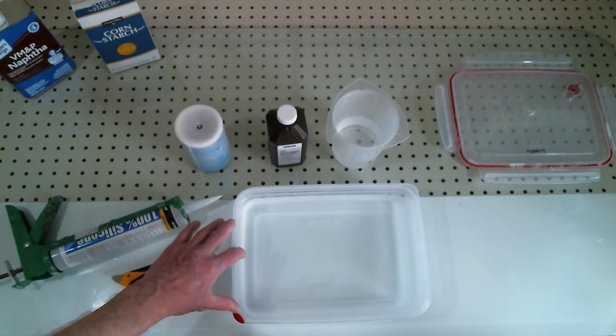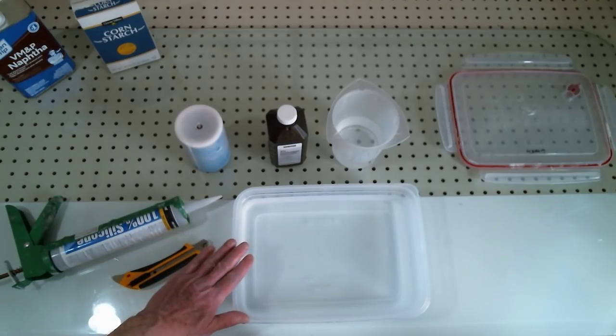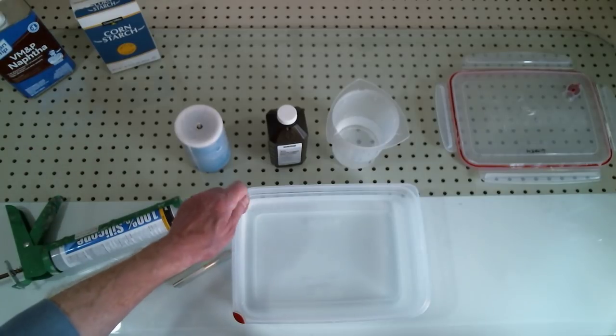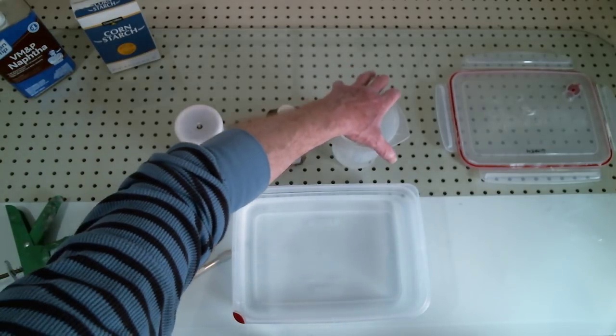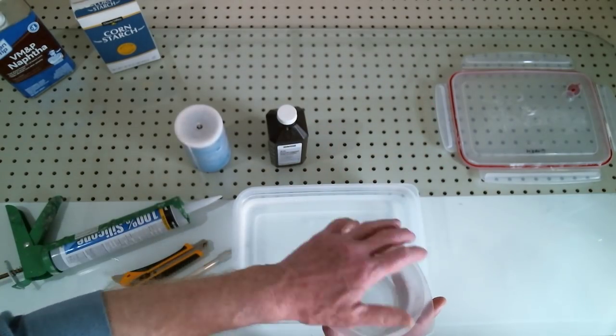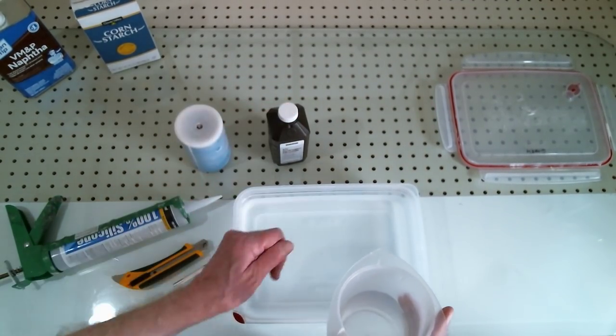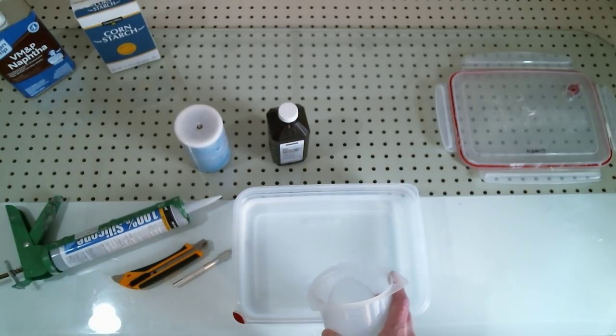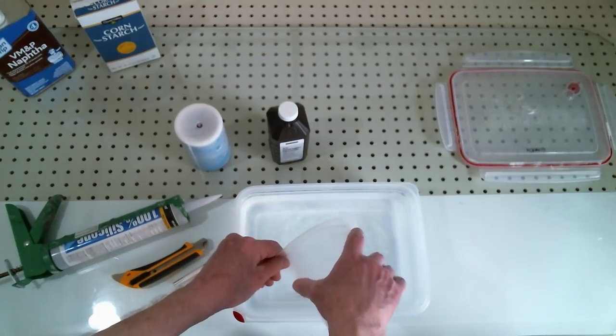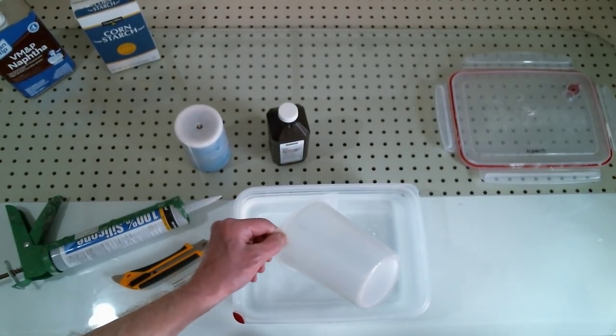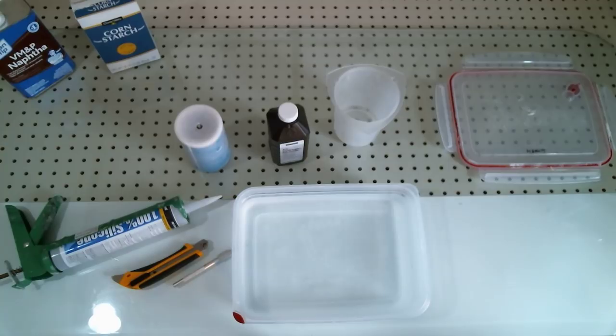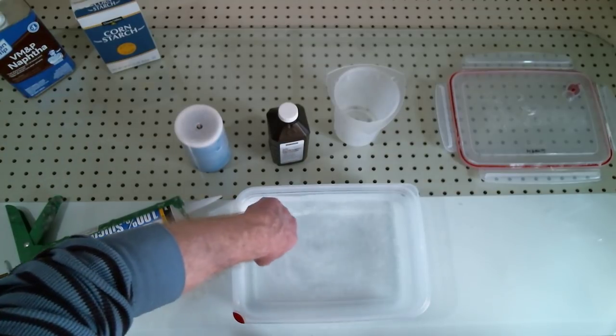Now what I've done is I've added half a gallon to this, 1.9 liters, and to that I'm going to add eight ounces of hydrogen peroxide, so that's roughly 235 milliliters. A little finger stir.